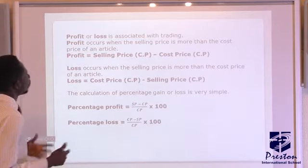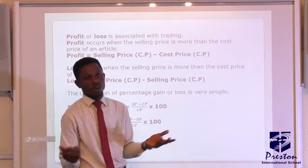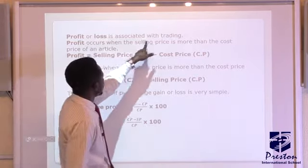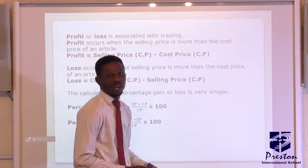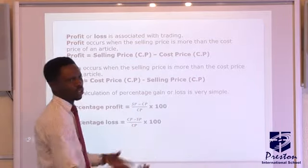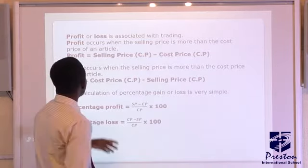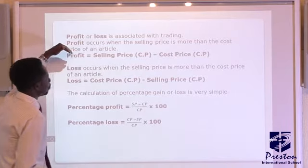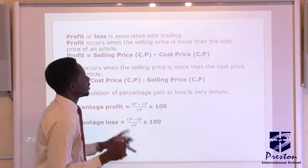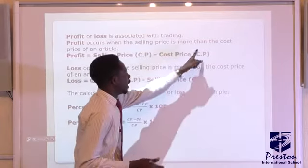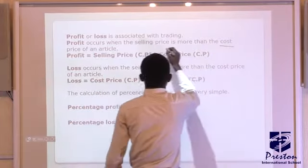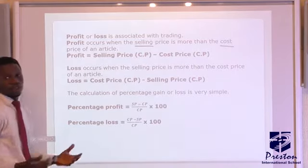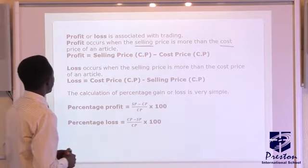Once you understand that, what then do we call profit? What is loss? Profit or loss is associated with trading. Most people are engaging in one business or the other — selling and buying — and they deal with profit and loss. Profit occurs when the selling price is more than the cost price. When the selling price is more than the cost price, we say such a person has made a profit.